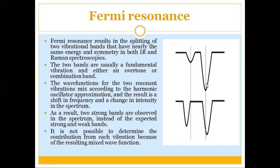In Fermi resonance, the wave functions for the two resonant vibrations mix according to the harmonic oscillator approximation, resulting in a shift in frequency and a change in intensity. As a result, two strong bands are observed in the spectrum instead of the expected strong and weak bands.